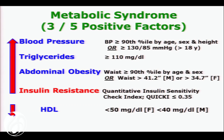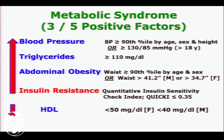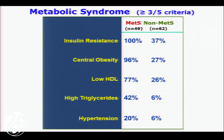So we used a more sensitive measure of insulin resistance. For this, we used a QUICKIE, which is very similar to the HOMA but of insulin sensitivity. We looked at a group of a little over 100 kids. The right column shows the control kids — they're not a squeaky clean control group. It's a group that does not fulfill three out of five criteria, but they may have one or two. So it's a real-world comparison group.